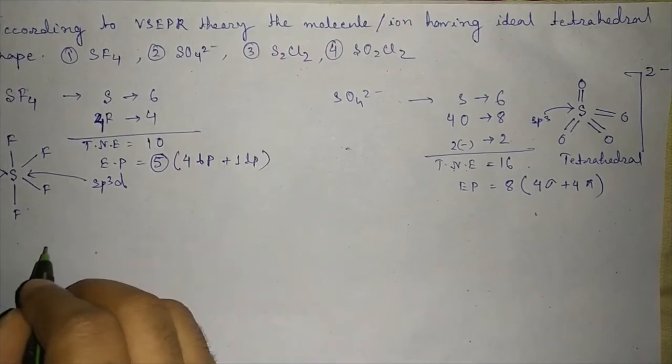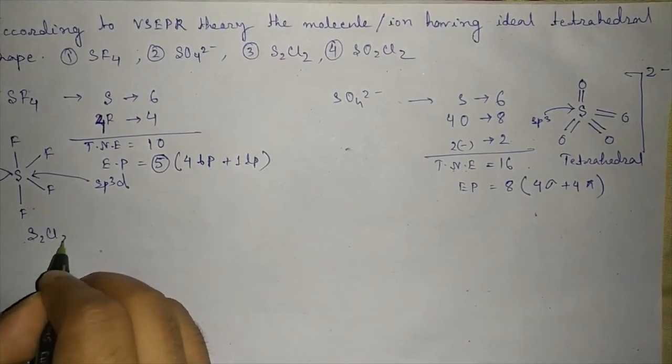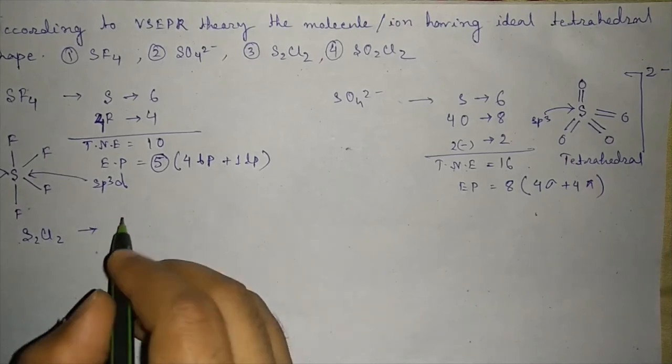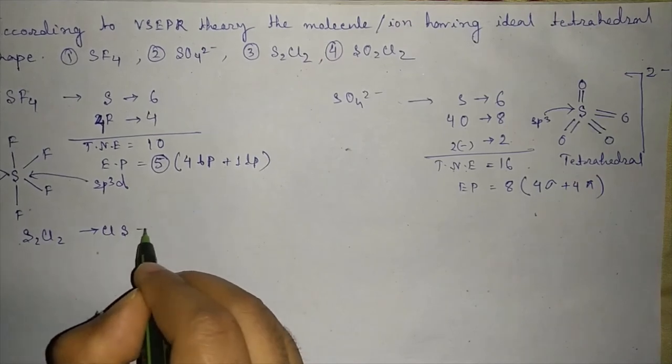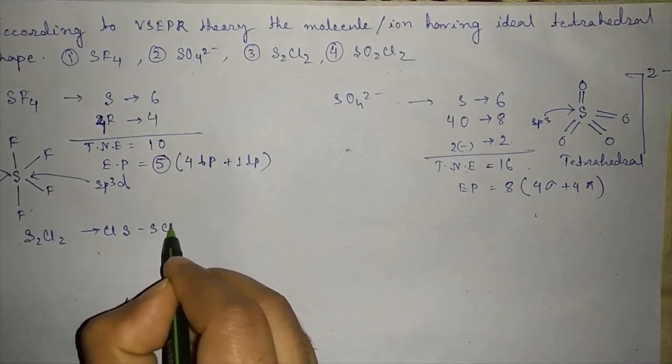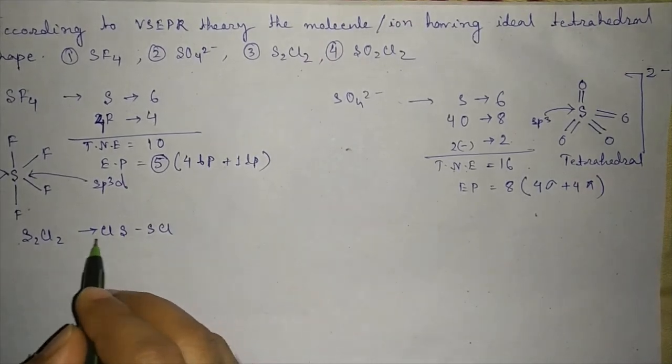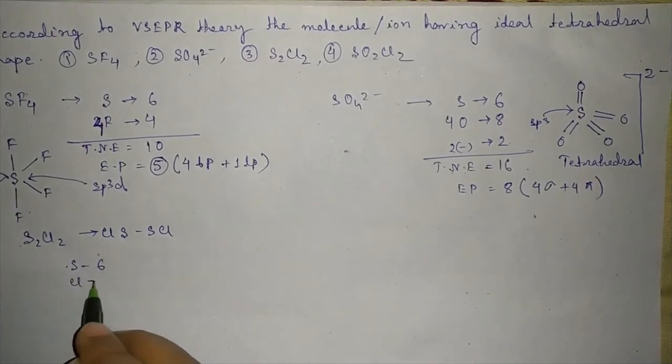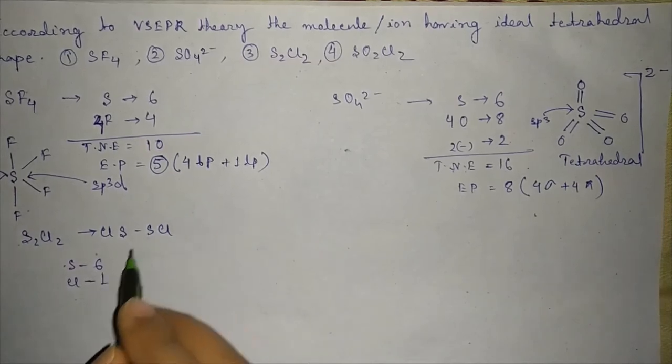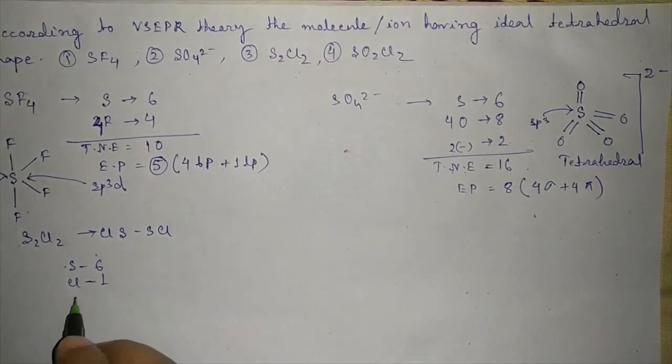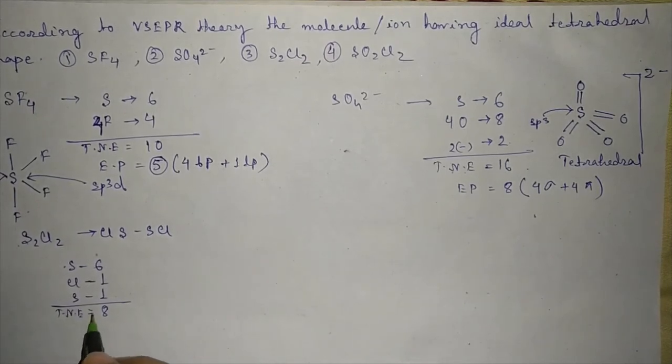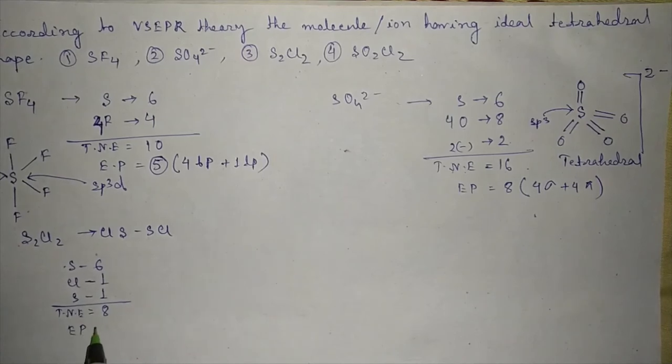Now we will come to S2Cl2. Here we will divide the molecule in two halves: Cl-S-S-Cl. For Cl part, sulfur has 6 valence shell electrons, 1 Cl has one electron, and for this sulfur we have one electron, total 8 electrons.